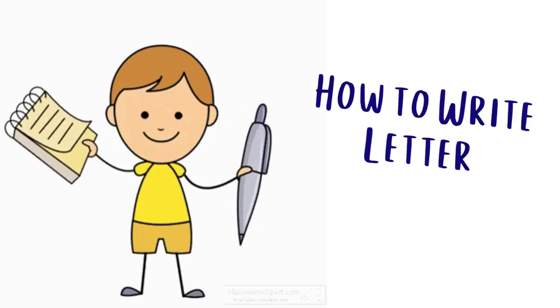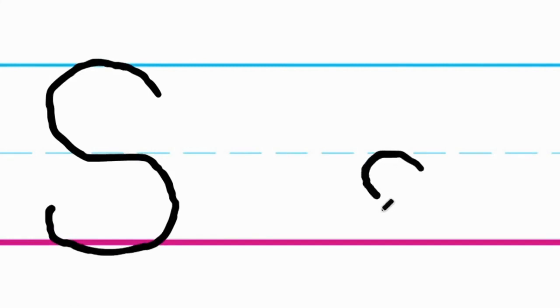Now, let's learn how to write the letter S. For capital S, start from the top and swing to the left and create a curve. Now, swing to the right and create another backward curve at the bottom. For small s, start from the middle and swing to the left and create a curve. Now, swing to the right and create another backward swirl at the bottom.